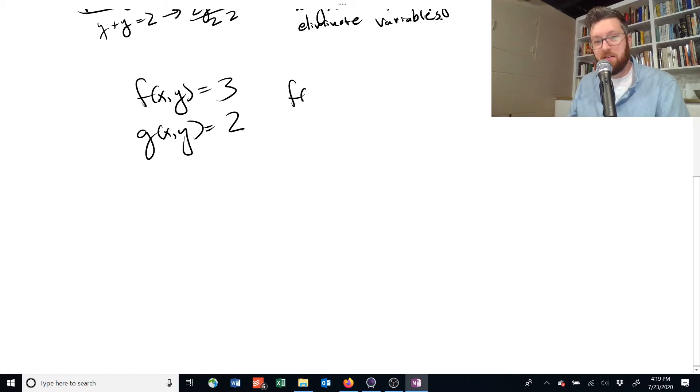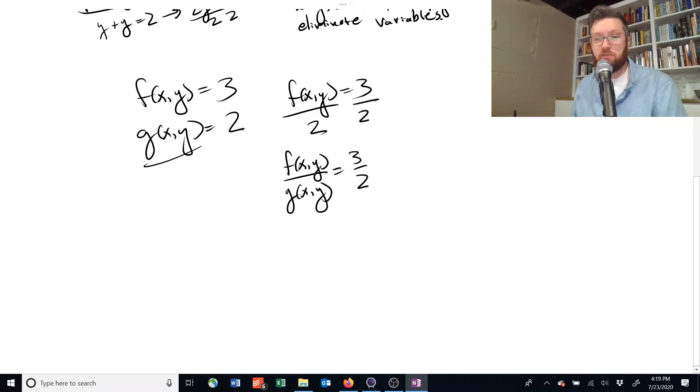We could divide f of x and y by 2 on each side. Okay? That's allowed. But since 2 is equal to this equation, we could also say that f of x of y divided by g of x of y is equal to 3 over 2. Right?